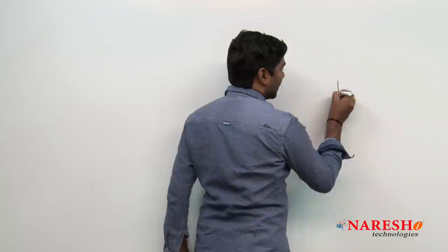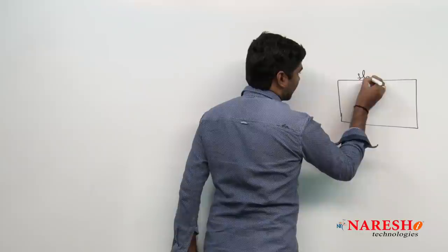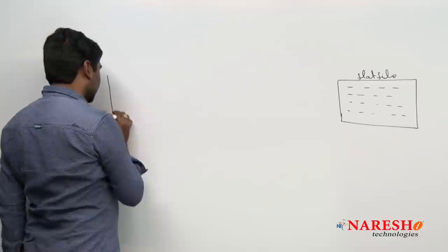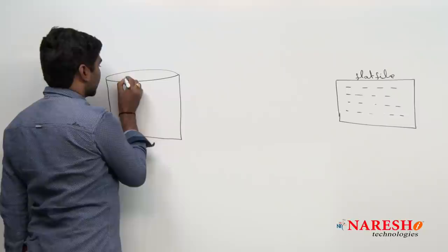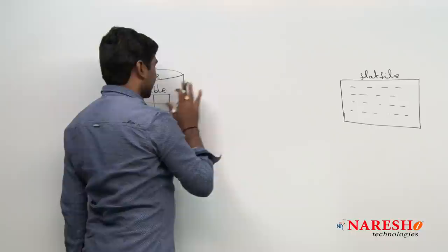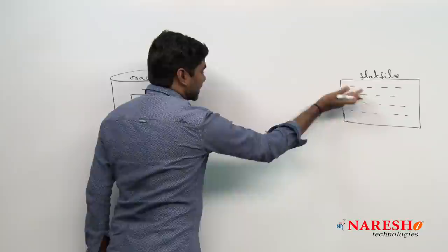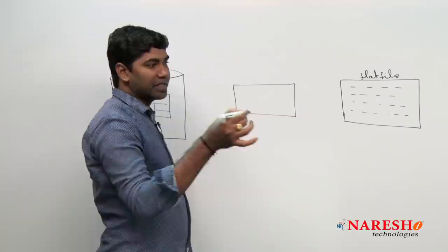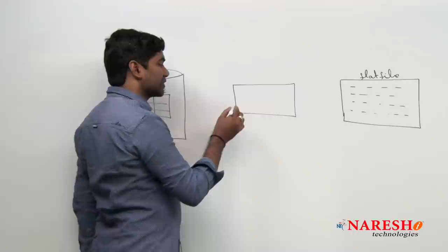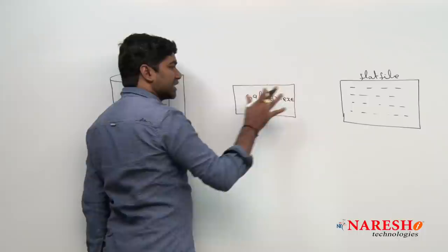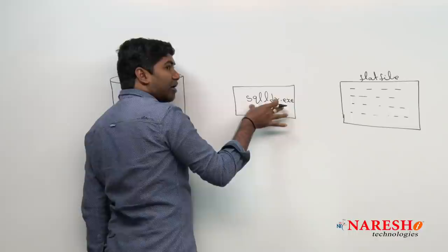This is a flat file — a file which has records only. Some records are available, either Fixed Length or Variable Length. This is Oracle Database, with some tables inside. This is the flat file (source) and Oracle Database is the target. To transfer data, we use the SQL Loader tool — sqlldr.exe. This exe file is available when Oracle Server is installed. But SQL Loader does not directly transfer data; it always executes a control file.